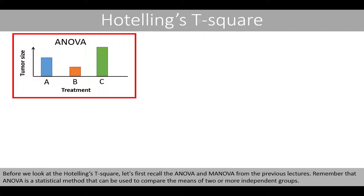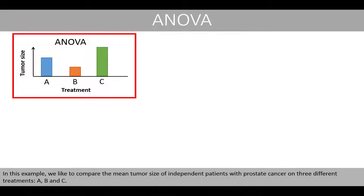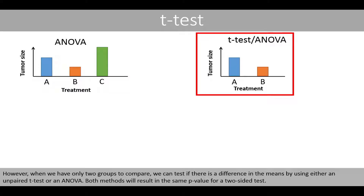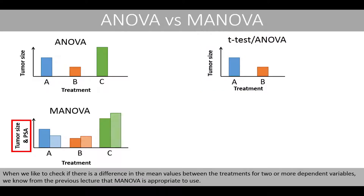Remember that ANOVA is a statistical method that can be used to compare the means of two or more independent groups. In this example, we like to compare the mean tumor size of independent patients with prostate cancer on three different treatments: A, B, and C. However, when we have only two groups to compare, we can test if there is a difference in the means by using either an unpaired t-test or an ANOVA. Both methods will result in the same p-value for a two-sided test. When we like to check if there is a difference in the mean values between the treatments for two or more dependent variables, we know from the previous lecture that MANOVA is appropriate to use.